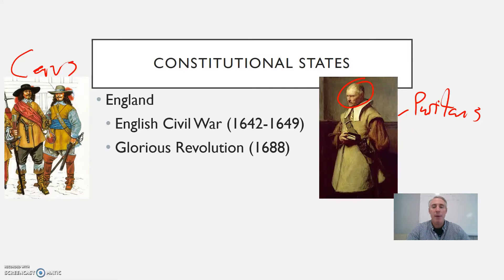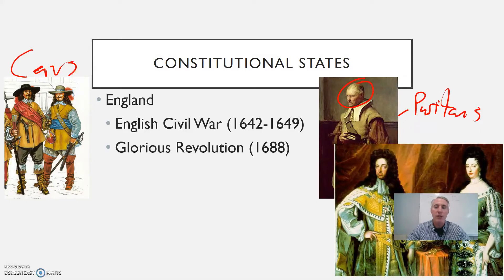The Puritan government that took over after Charles's execution eventually became a dictatorship that most people resented, and this led to further conflicts that would culminate in the Glorious Revolution in 1688 — it was called glorious because it was bloodless. At the time, King James the Second was in power, but he was a Catholic, so not winning over too many people. Parliament kicked him out and put his daughter Mary and her Dutch husband William of Orange in power, giving England the joint monarchy of William and Mary. From that point forward, the English king would rule in cooperation with parliament.